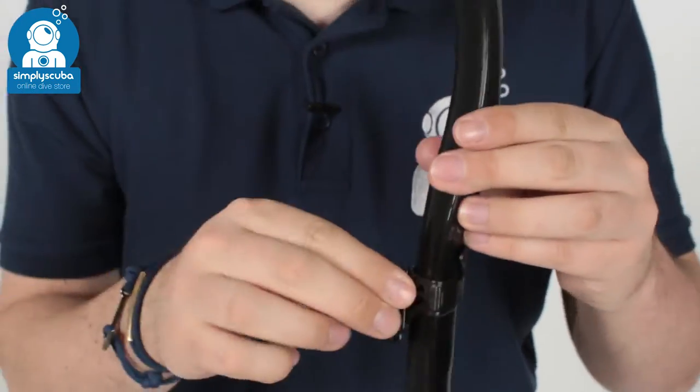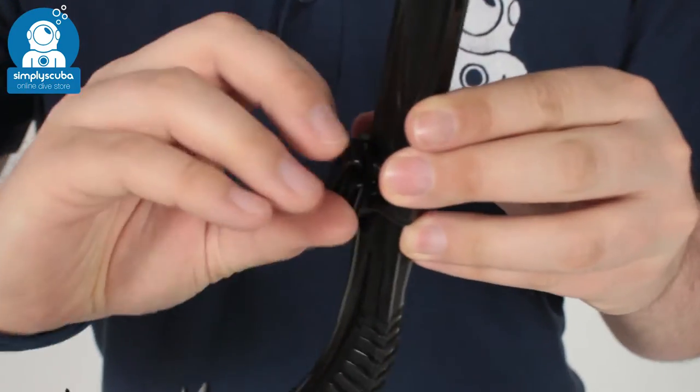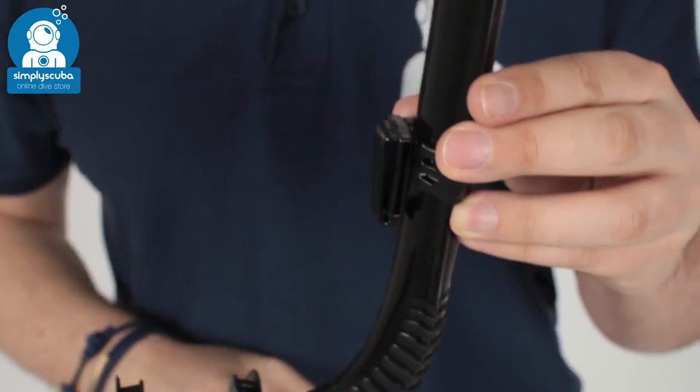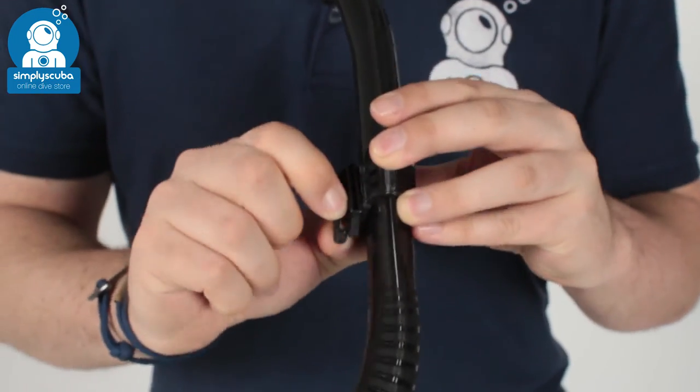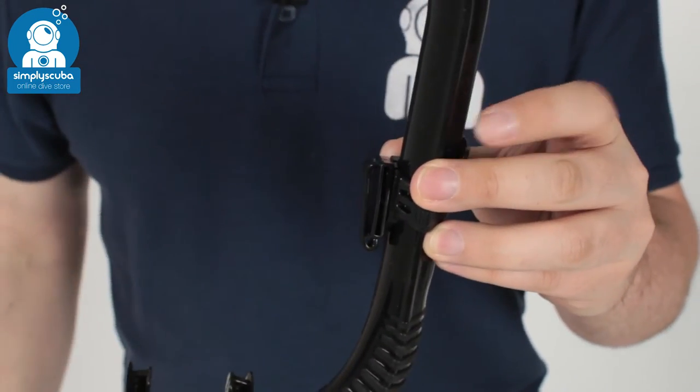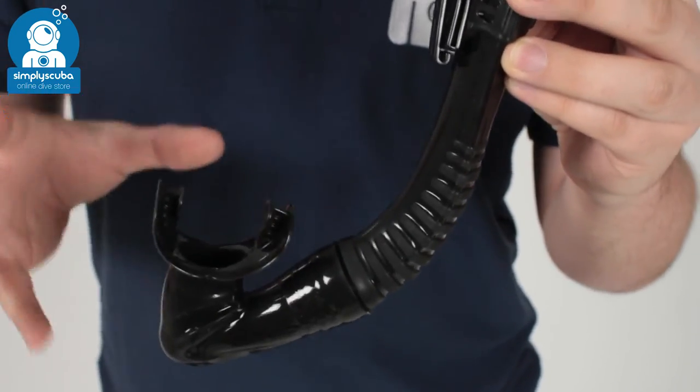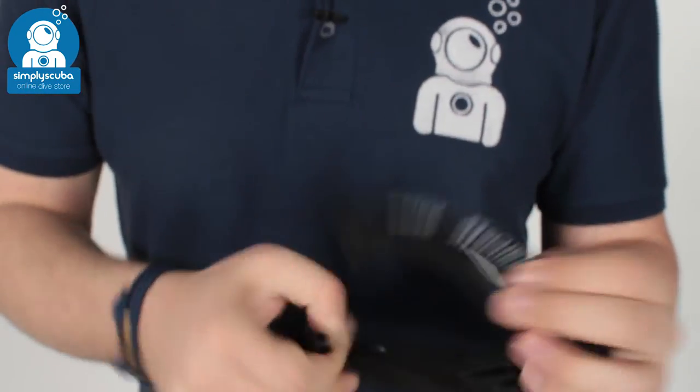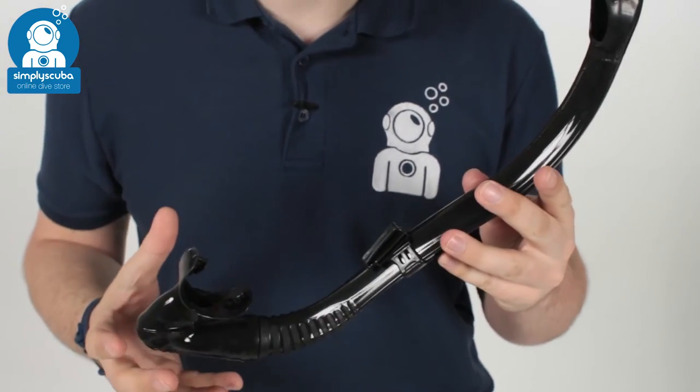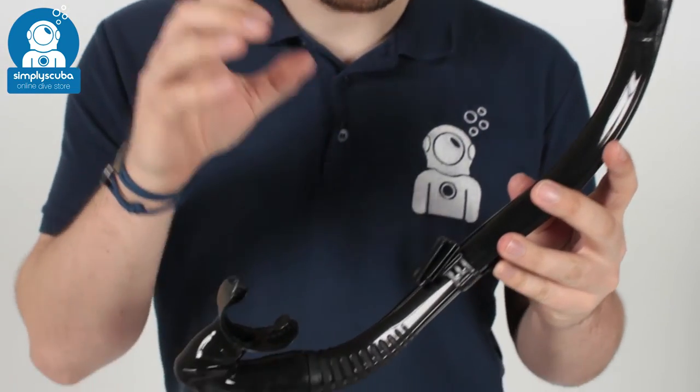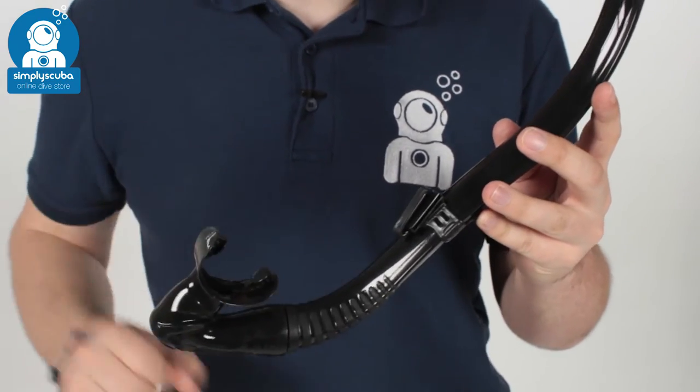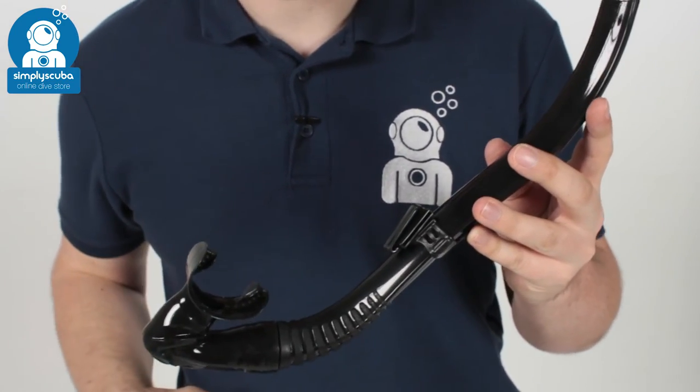So the snorkel clip itself is a rotating, flexible clip. You just put it over your mask strap and you're ready to rock and roll. Very simple, very easy to use, and it's handy because it's so flexible that storing it in your bag, even if it gets kind of squished or crushed by anything, nothing's going to go wrong because it's completely flexible.